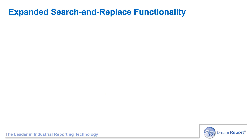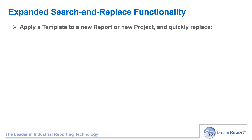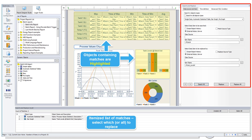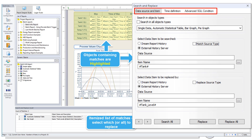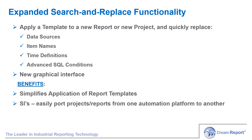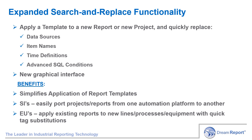With the new search and replace interface, whether you're editing an existing report, or applying a report template to a new report or a new project, the new interface allows you to quickly replace data sources, item names, time period definitions for your report objects, and SQL or advanced filtering conditions on your objects. The new graphical interface includes many options and search criteria. It highlights the objects on a report that contain matches to the search criteria, and then allows you to pick from a list of individual or all items to replace. The obvious benefits here are that it further simplifies applying report templates to reports or other projects. SIs can benefit in that it allows them to easily port projects or reports from one automation platform to another, and end users can apply existing reports to new lines, processes, equipment, etc., with quick tag substitutions.